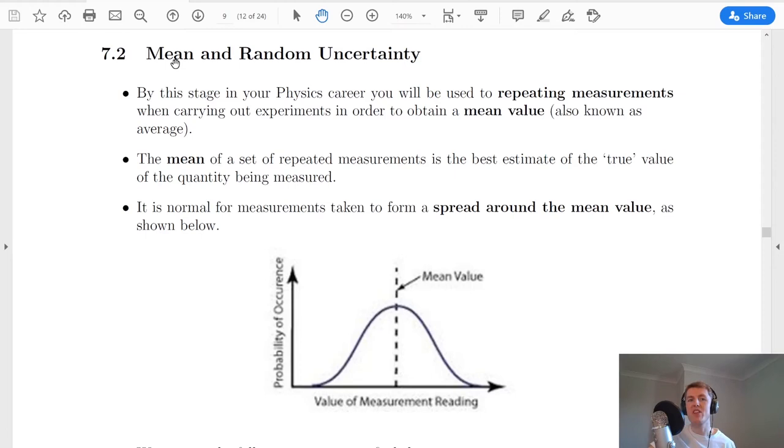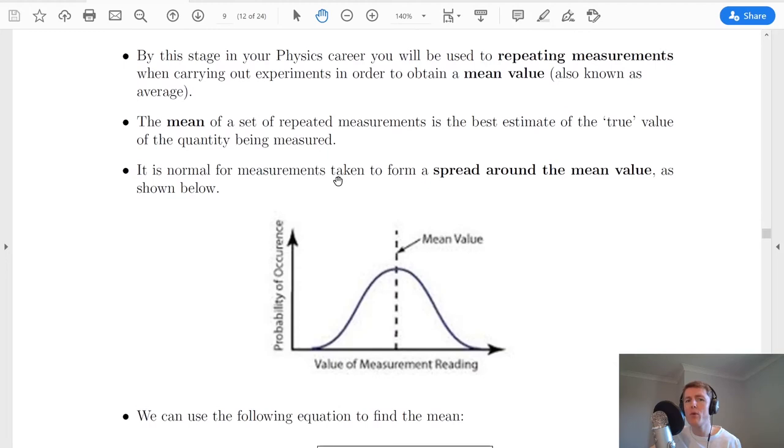Moving on to the next type of uncertainty we have mean and random uncertainty. So by this stage in your physics career you'll be used to repeating measurements many times in order to obtain a mean or an average. Remember that we say that the mean of a set of repeated measurements is the best estimate of the true value of the quantity being measured. You're never going to quite get the measurement that you're looking for 100% accurate, but the best estimate you could get of that is if you take the mean of it.